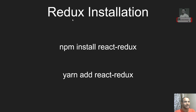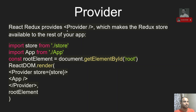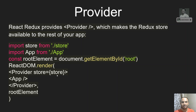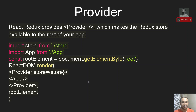For React-Redux installation, just like we use npm install redux, we use npm install react-redux. If you are using Yarn, use yarn add react-redux. For initialization, React-Redux provides a Provider component which makes the Redux store available to the rest of your app. At the top level in app.js, you wrap your app with Provider and pass the store created using Redux's createStore as a prop.